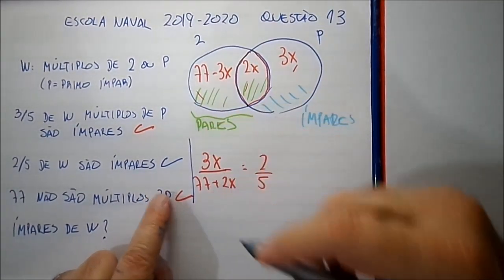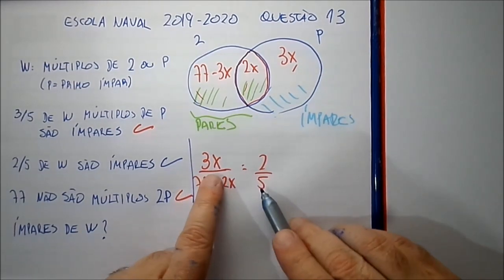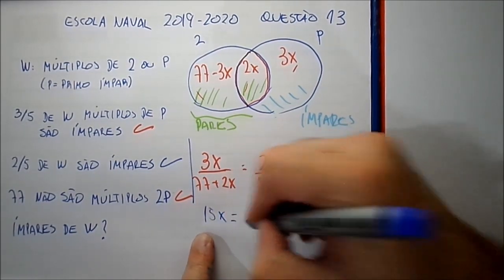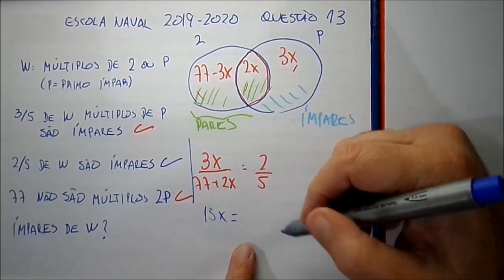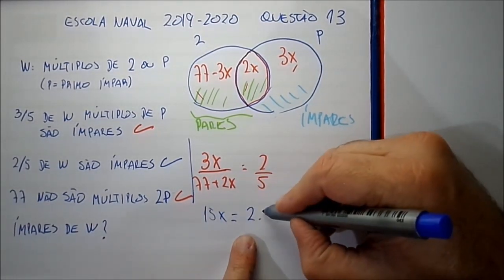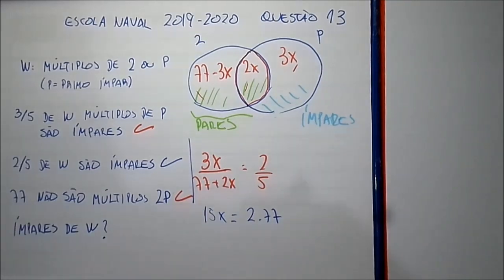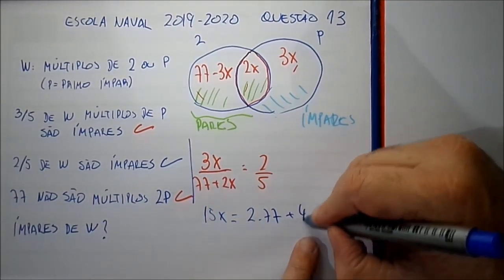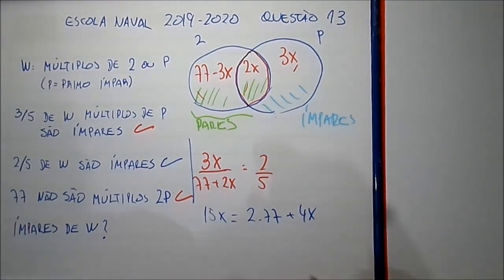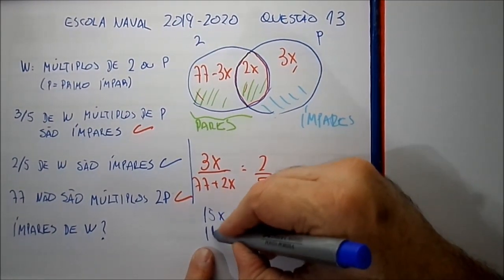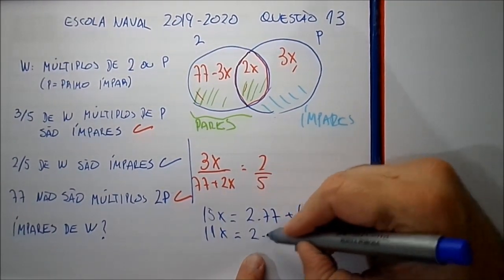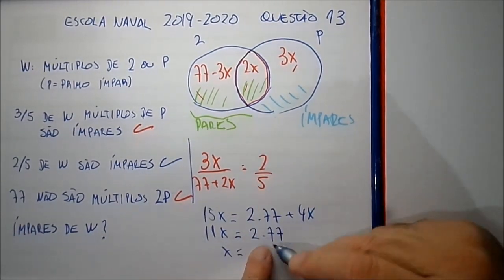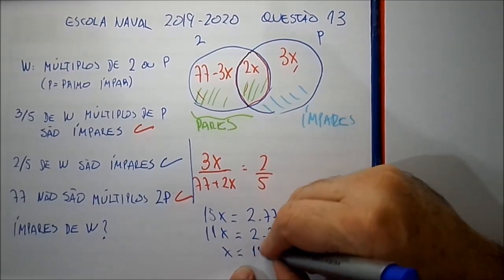Com isso a gente pode resolver. Multiplicando: vai ficar 15x igual a 2 vezes 77 mais 4x, ou seja, 15x igual a 154 mais 4x. Isso fica 11x igual a 2 vezes 77. Simplificando por 11, vai ficar x igual a 2 vezes 7, portanto x igual a 14.